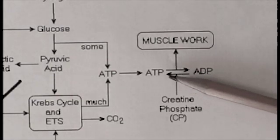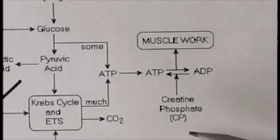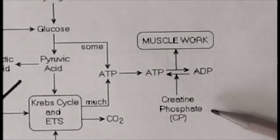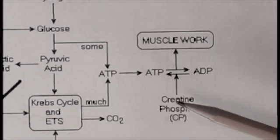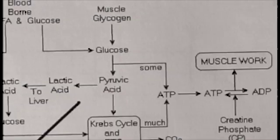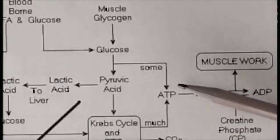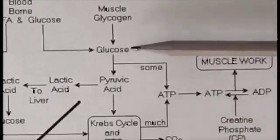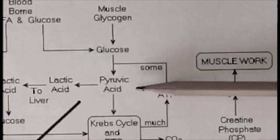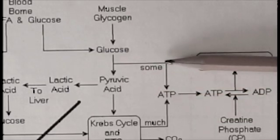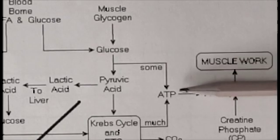So the question is, where does the ATP come from? Well, some of it comes from a storage molecule called creatine phosphate. Most of it, however, comes from cellular metabolism. The ATP in cellular metabolism arises from the breakdown of glucose to pyruvic acid, which we call glycolysis, and it generates some ATP.